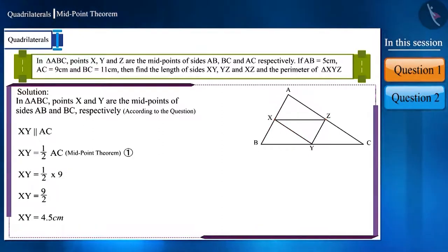Similarly, points X and Z are the midpoints of sides AB and AC respectively. Using the midpoint theorem, we can write it this way. The measurement of BC is 11cm, from which we can find the measurement of XZ. We will get XZ as 5.5cm.